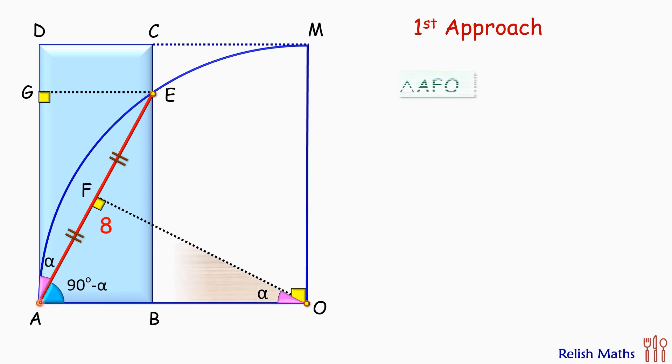Thus triangle AFO and triangle EGA are similar by angle-angle similarity. As the triangles are similar, the ratio of corresponding sides will be equal, or AF upon AO will be equal to EG upon EA.